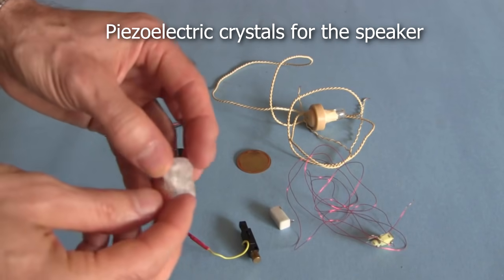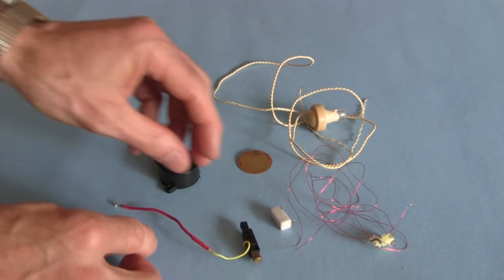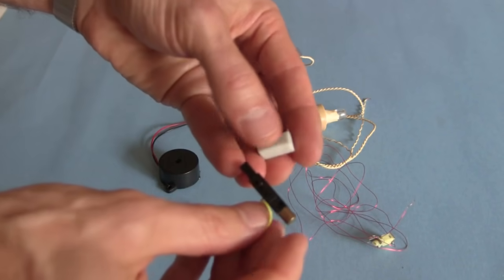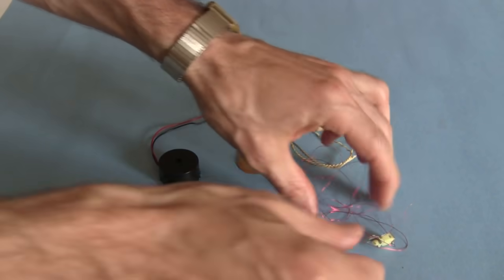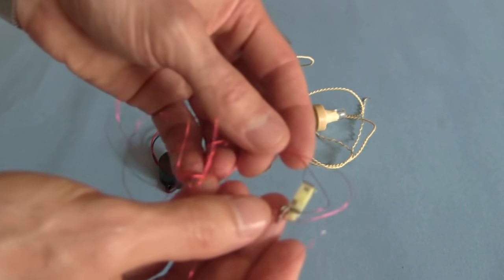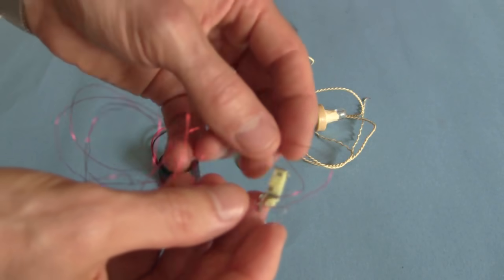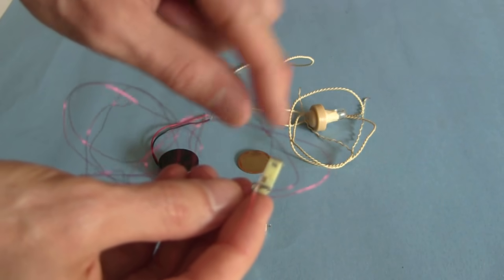For the speaker I'll use a piezoelectric crystal. This is a Rochelle Salt crystal that I made. These are two igniters that I got from barbecue lighters. This one came from a normal hand lighter.